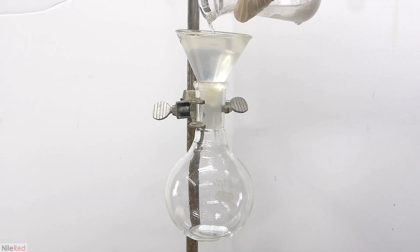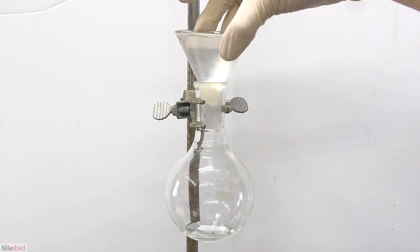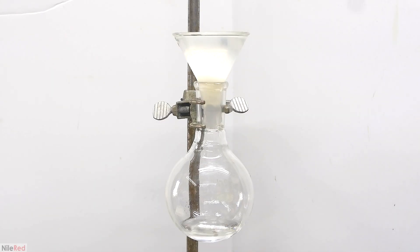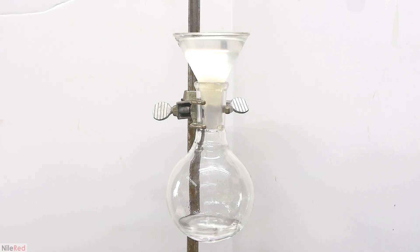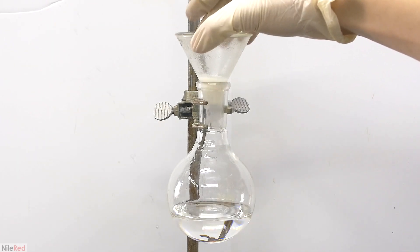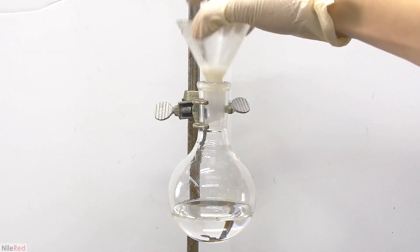The magnesium sulfate is then separated from the benzaldehyde by filtering it through a little bit of cotton. What filters through is some nice crystal clear benzaldehyde, which indicates that pretty much all of the water has been removed. After everything is filtered through, the funnel is removed, and I seal the flask using a stopper.